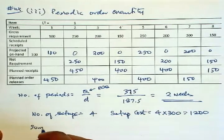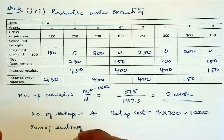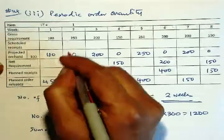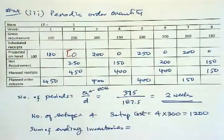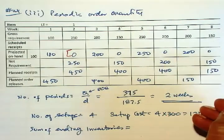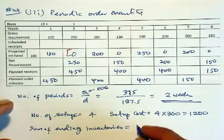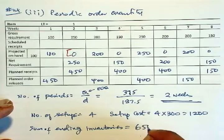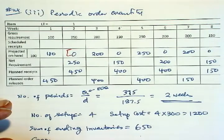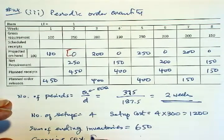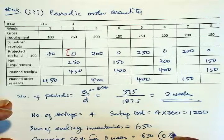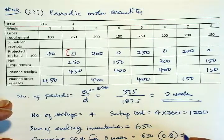The sum of ending inventories, remember we have to sum from here. And that will be 200, 250, 200 plus 0, which will be 650. So that is the sum of these. So carrying cost or holding cost for 8 weeks is 650 times 0.8. So that will give you 520.